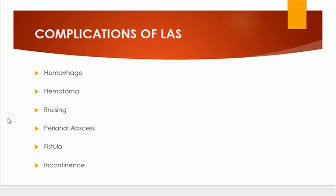Complications of lateral anal sphincterotomy include hemorrhage, which can be reduced with the use of local adrenaline. It can result in hematoma formation, and lot of bleeding results in bruising of the area. Sometimes it results in perianal abscess formation, and fistula formation can occur. If the sphincter is damaged, incontinence can occur. But if done safely, it is a wonderful procedure that gives rapid relief to the patient.